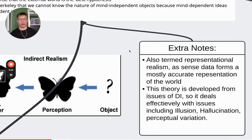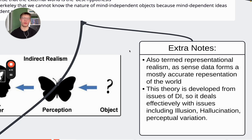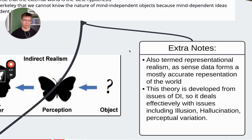Indirect realism is easier to write about than direct realism because there is more substance to it. It is also called representational realism, or even representational materialism in more advanced philosophy. Sense data is a very accurate but not entirely accurate representation of the world. This theory is developed from issues of direct realism, and so it does effectively deal with issues of illusion, hallucination, and perceptual variation.